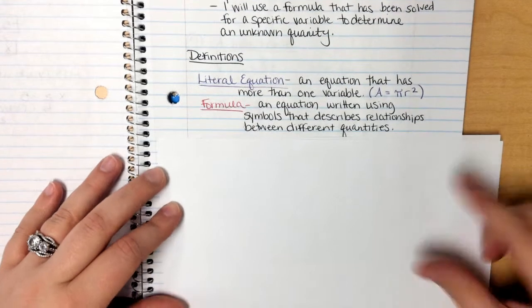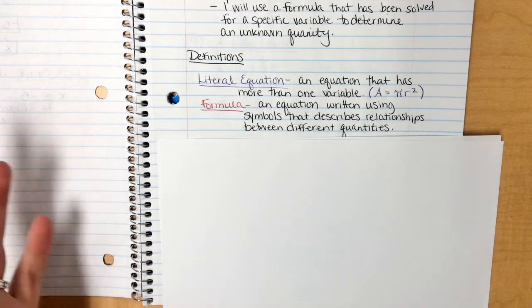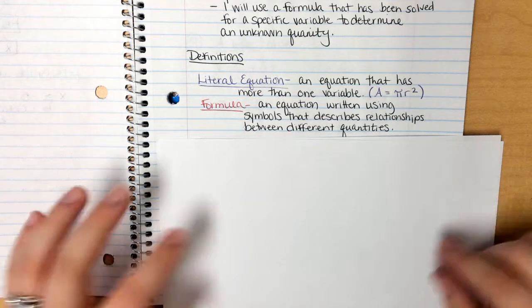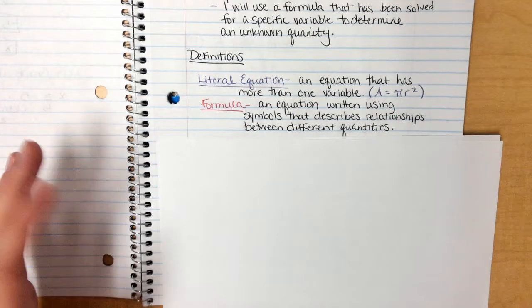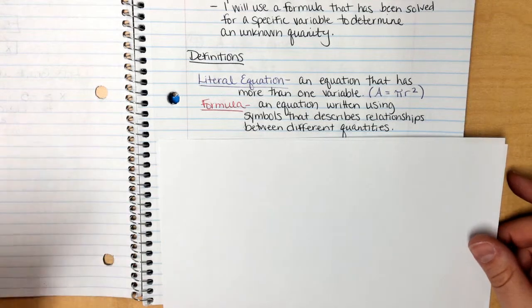The second definition I want to talk about is a formula. A formula is an equation written in symbols that is used to describe relationships between different quantities. So this guy right here is a literal equation. He is also called a formula. He is the formula for the area of a circle.